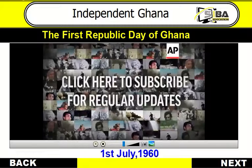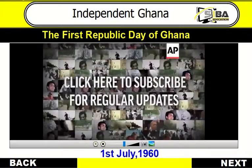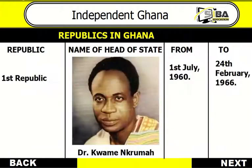Our first republic occurred on the 3rd of July 1960. Just like we saw in the first republic footage, the president at that time was Dr. Kwame Nkrumah. His presidency lasted from 1st July 1960 to 24th February 1966.